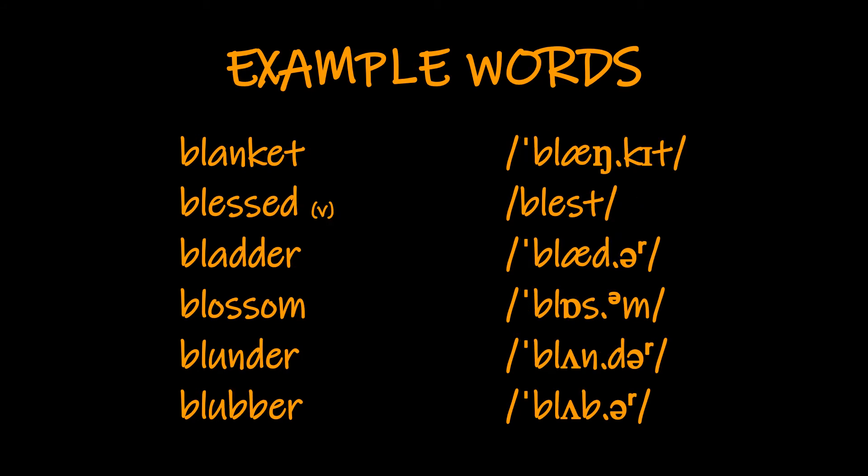Now, with the words here, you'll notice that at the beginning of most of them there is a little mark before the /bl/, with the exception of the second word. This little mark tells us that that is the strong syllable of the word. So, for example, with the first word, we need to say 'blanket' and not 'blanket' — the stress is at the beginning. As you work through this word list, try to keep your attention on two things: the /bl/ cluster and also the word stress.